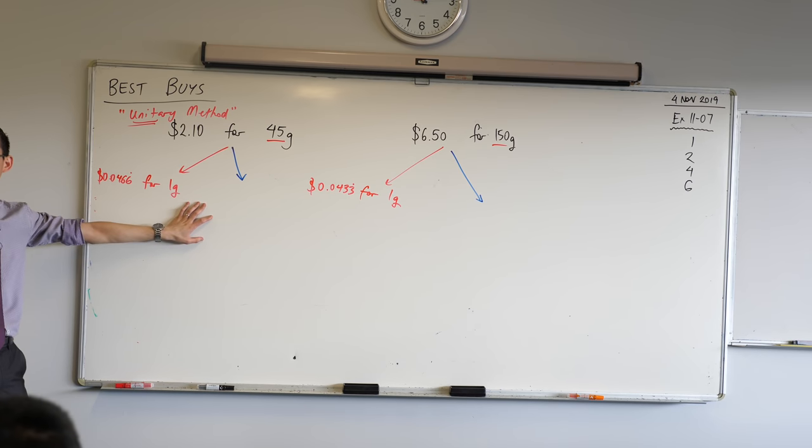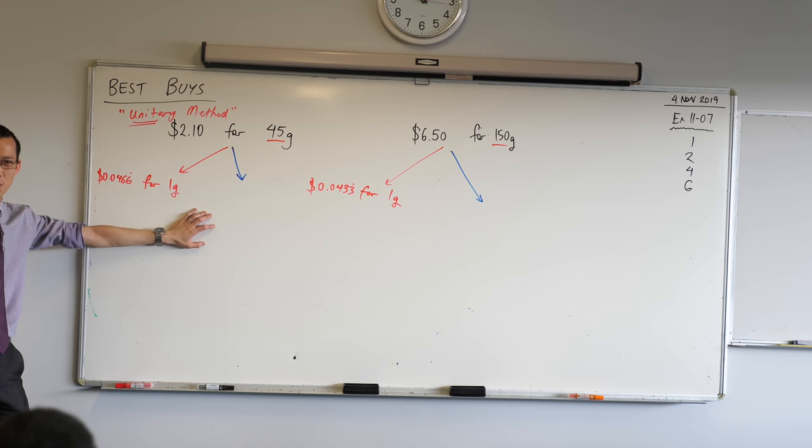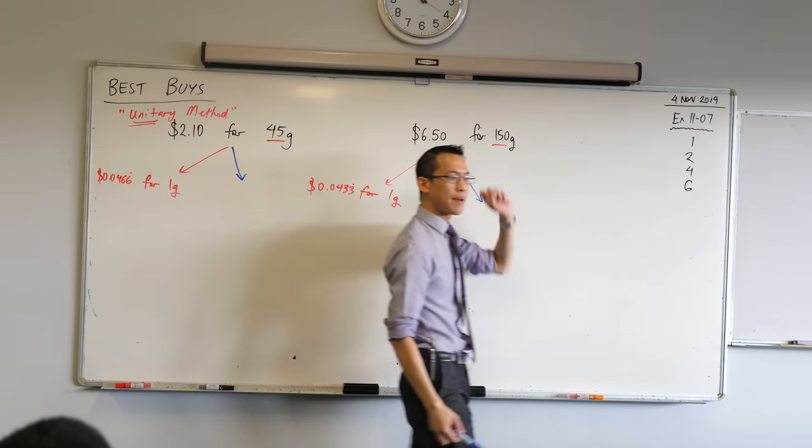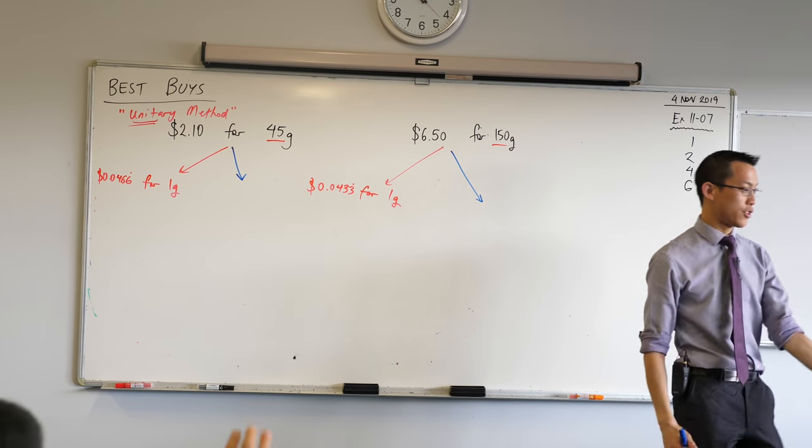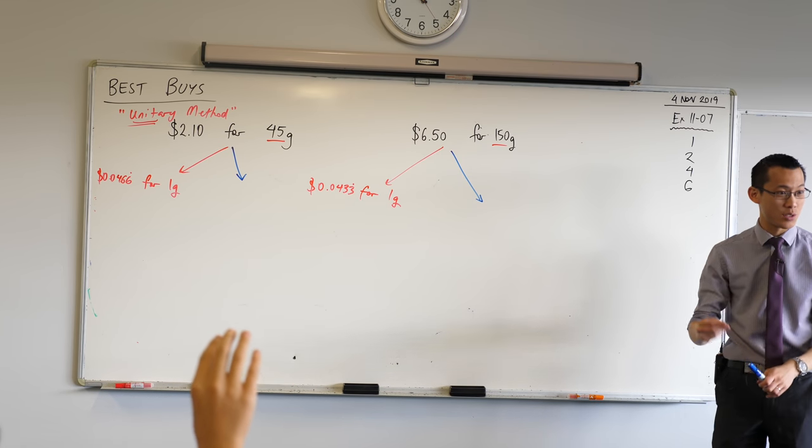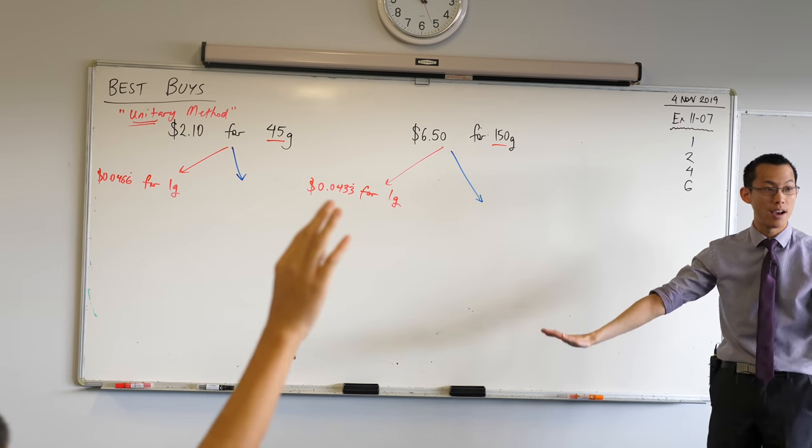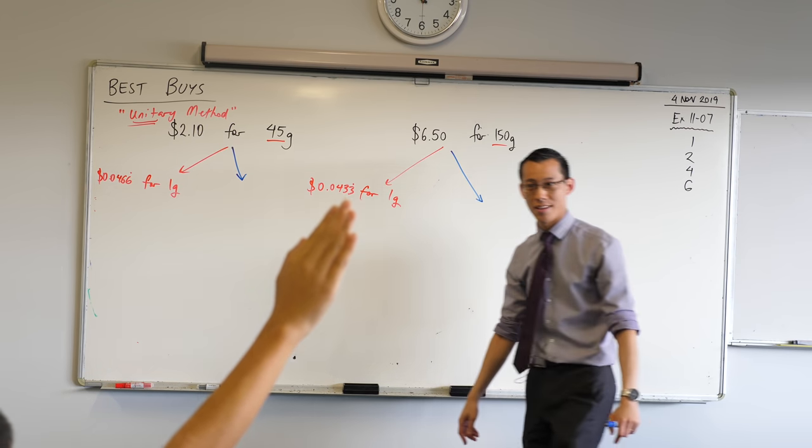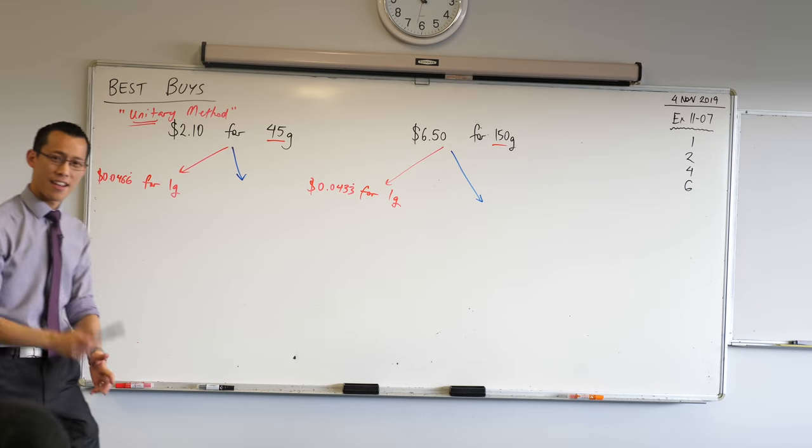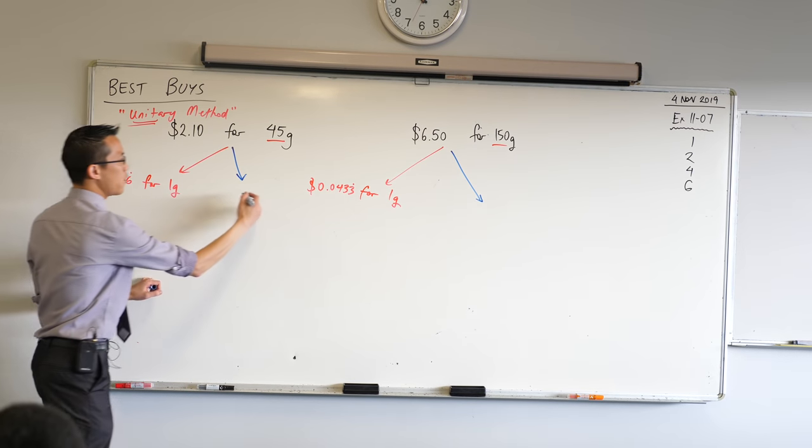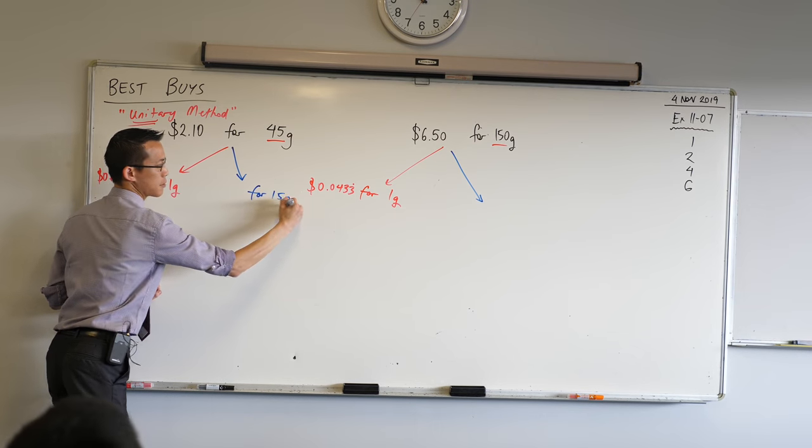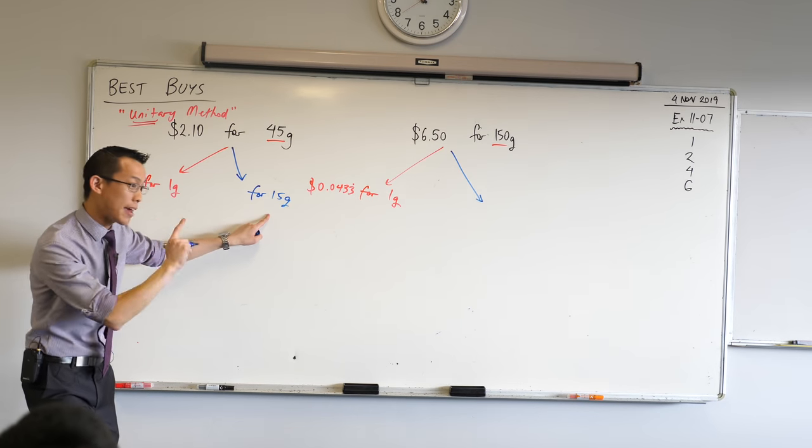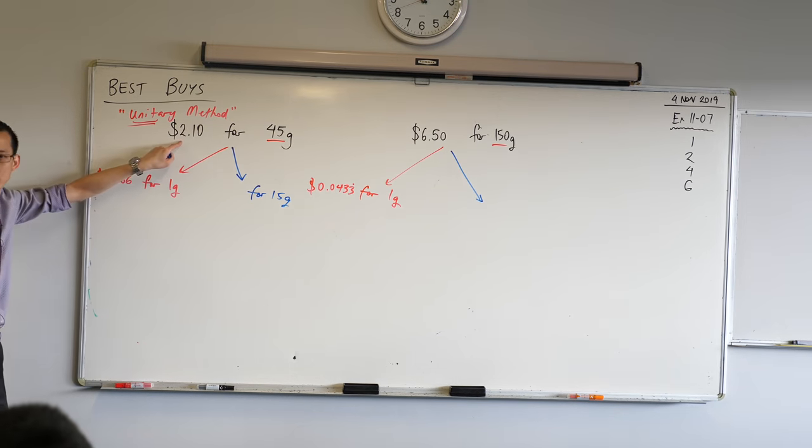But there's an easier number, and I want you to look carefully. Don't shout it out, but I want you to raise your hand once you see it. There's an easier number that we can get between 45 grams and 150 grams. It's really quite easy to divide. So you don't need your calculator at all. Have a think. What do you see here? 15. 15 grams. If I worked out for 15 grams, how do I get from 45 to 15? What do I divide by? I'll divide by three. So that means I should divide this by three as well. You don't need a calculator for this. What's that divided by three? 70 cents. So that's $0.70. 70 cents.